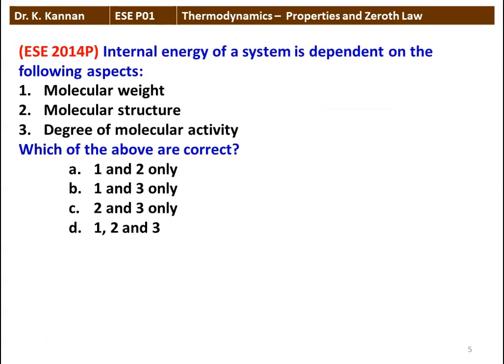Next question: internal energy of a system is dependent on which of the following — molecular weight, molecular structure, or degree of molecular activity? The options include each of the above, or combinations 1 and 2, 1 and 3, 2 and 3, or 1, 2, and 3. When you look at internal energy at the microscopic level, it depends on molecular activity, molecular weight, molecular structure, and degree of molecular activity. All three are the answers — the internal energy of the system is dependent on molecular weight, molecular structure, and degree of molecular activity.